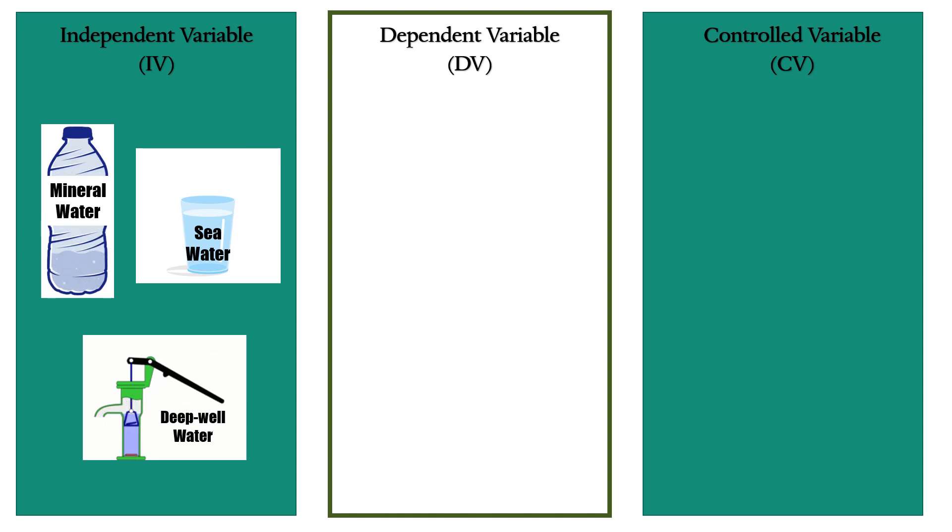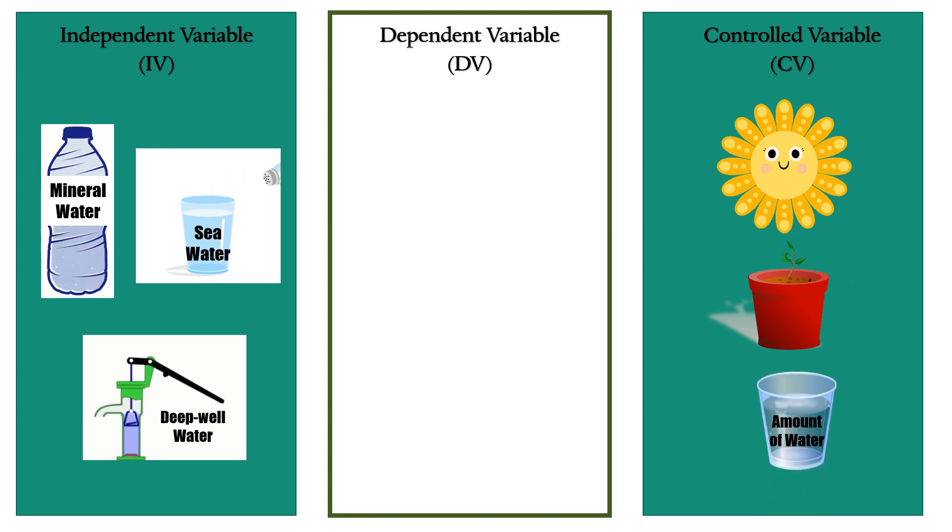What about the controlled variables? What do you think are the supporting characters in the experiment? Remember, controlled variables are the things common to all or remain the same all throughout the experiment. Yes! Correct! Controlled variables are the type of plant which is the same in all types of water planted in the same type of soil and pot. The sunlight and the amount of water.